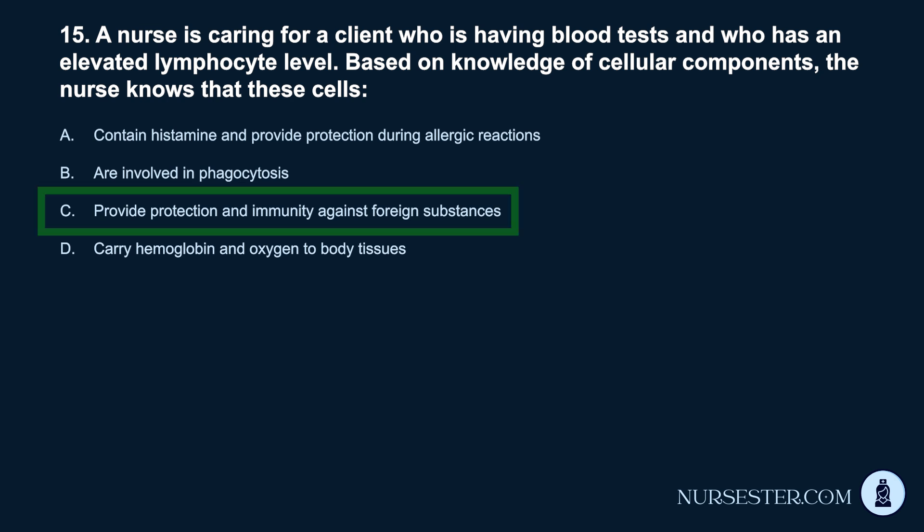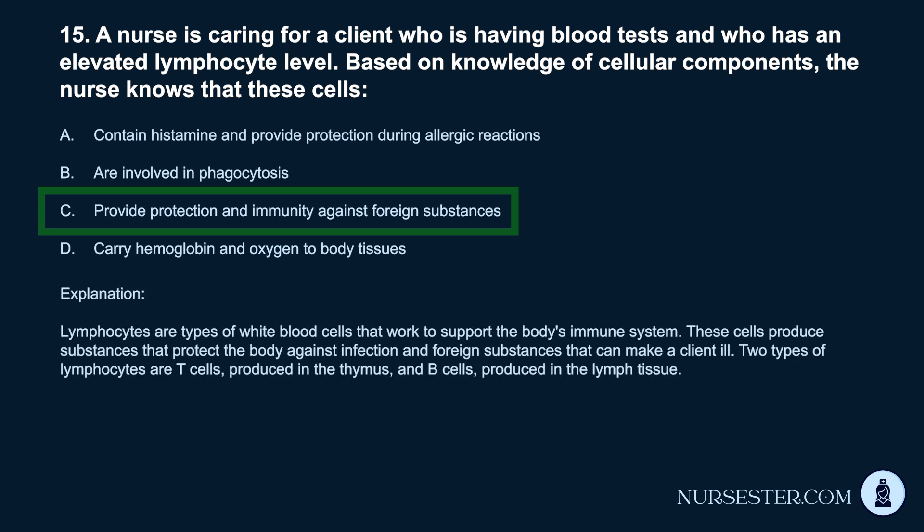Correct answer: C. Provide protection and immunity against foreign substances. Lymphocytes are types of white blood cells that work to support the body's immune system. These cells produce substances that protect the body against infection and foreign substances that can make a client ill. Two types of lymphocytes are T cells, produced in the thymus, and B cells, produced in the lymph tissue.